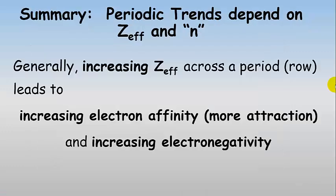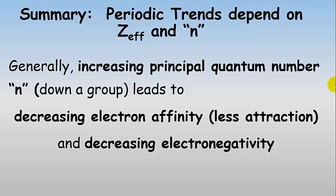In general, increasing effective nuclear charge across a period leads to increasing electron affinity — more attraction for an incoming electron — and increasing electronegativity, meaning greater greediness in pulling electrons away from neighboring atoms. As you go down a group, you're going to have decreasing electron affinity — less attraction — and also decreasing electronegativity, so elements are less electronegative as you go down a group.